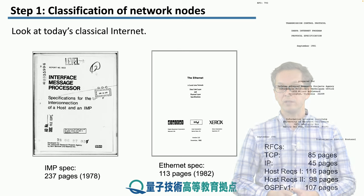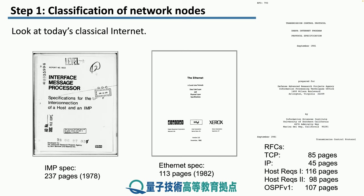Here's an example of an early spec for the interface message processor — it's 237 pages long. Just writing down all the rules for the messages and all the formats takes 237 pages. This gives you an idea of how complex these systems really are.